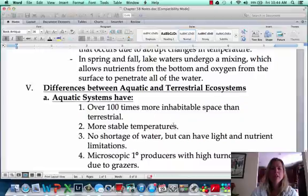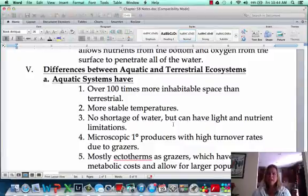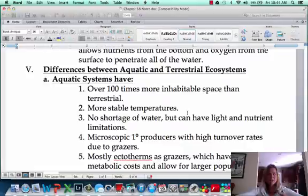Okay, then the last thing I wanted to talk about is going to be differences between aquatic and terrestrial ecosystems. So we've talked about this from time to time, but let's just kind of put it all together. So obviously one big difference is that aquatic ecosystems are going to have over 100 times more inhabitable space than terrestrial. So in terrestrial, you're going to run out of room. There's going to be crowding that's going to happen, but in aquatic systems, there's room everywhere, right? The next thing is going to be that aquatic systems have more stable temperatures, and that's because of the specific heat of water, right, and how water does that hydrogen bonding, and so it kind of sticks to its own stuff, and so it's hard to get the water molecules moving.